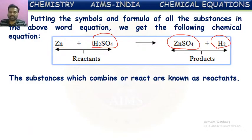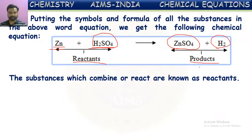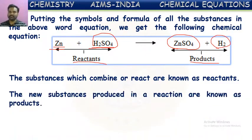In this equation, the substances which combine or react are known as reactants. In this reaction, zinc and dilute sulfuric acid are reacting, so these two are called reactants. The chemical substances which are formed are known as products. Here, zinc sulfate and hydrogen gas are both formed, so these two are called products.